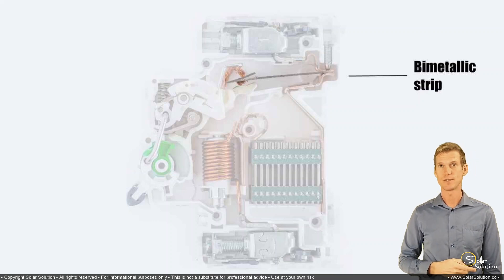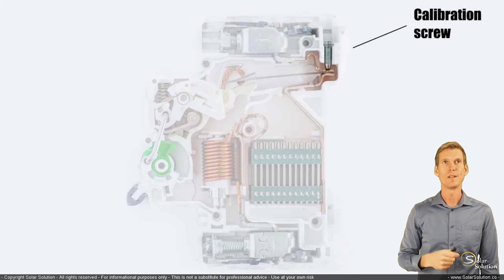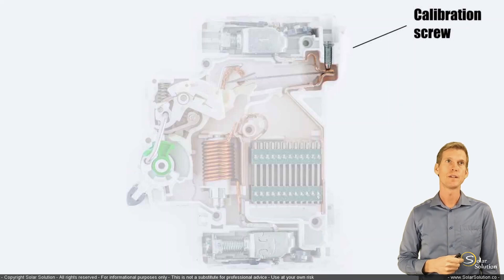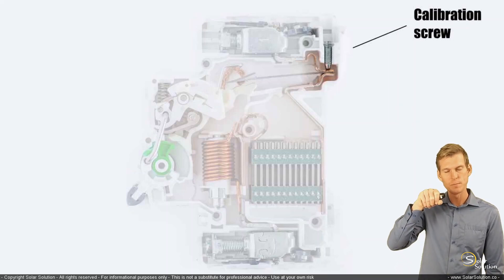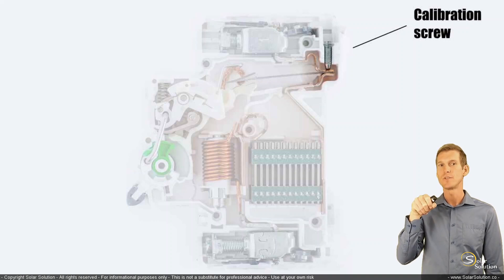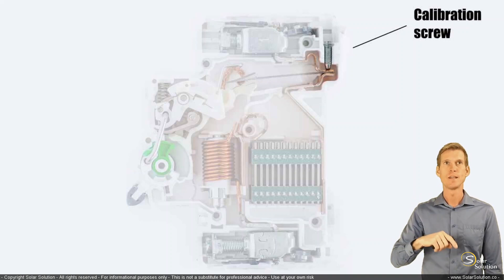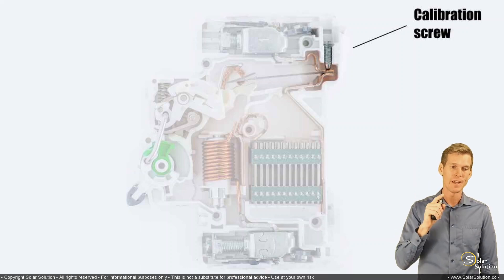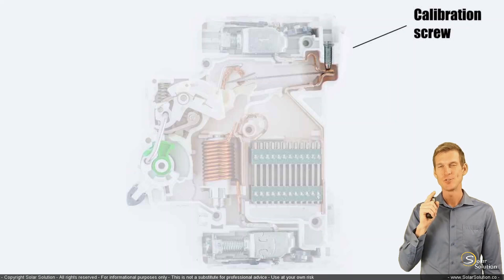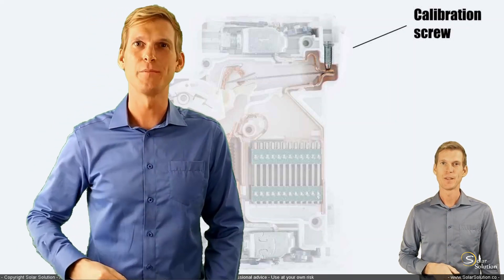Most breakers have a calibration screw, normally at the top, used to fine-tune at which point the bimetallic strip will open or close the circuit based on the slow tripping current. This calibration screw is set in the factory and you should not touch it.